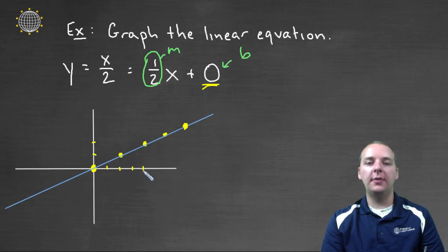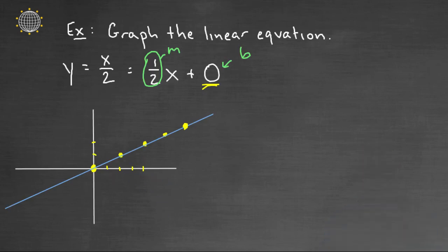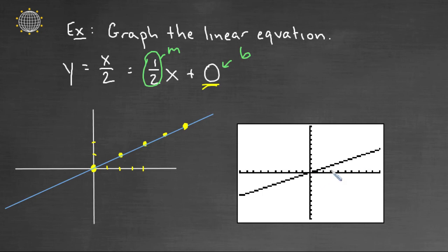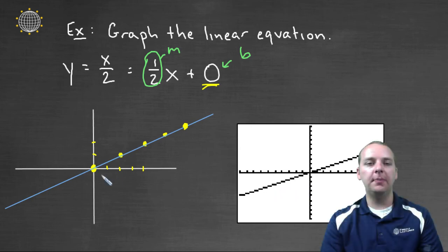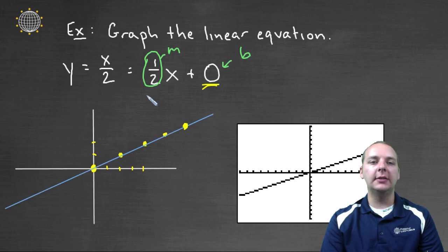Now I also went ahead and graphed this line as well. I'll see if I can squeeze this one in right here. Here's the graph of y equals x over two on a calculator. And you'll notice that they line up perfectly. They both go through the origin. They both have the correct slope. And again, it's just so nice that we can graph these linear equations so quickly, just by having the slope with the y-intercept.